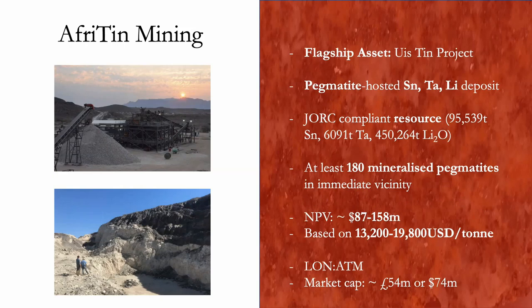Before I talk about the project, I'm going to talk about the company that sponsored me. AfroTin Mining's flagship asset is the Uis Tin Mine in Uis, Namibia. It's a pegmatite-hosted tin, tantalum and lithium deposit with a JORC-compliant resource of around 95,000 tonnes of tin, 6,000 tonnes of tantalum and about 450,000 tonnes of lithium oxide. This is just one pegmatite, and on the same mining license, they have at least 180 similar mineralised pegmatites which they haven't drilled or got a resource on, so it really is a huge deposit.